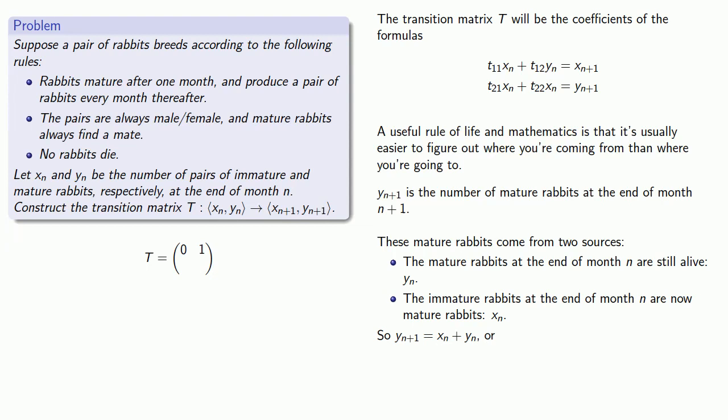And again, writing this formula in standard form, we have 1xn plus 1yn equals yn plus 1. And these coefficients will give us the second row of the transition matrix.